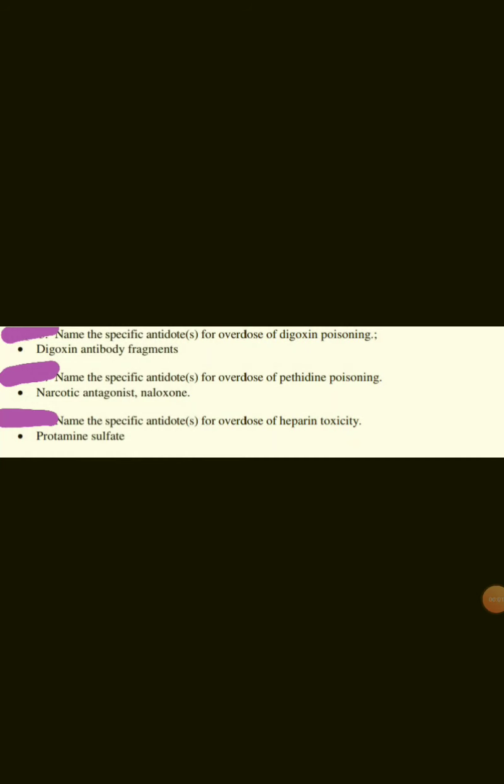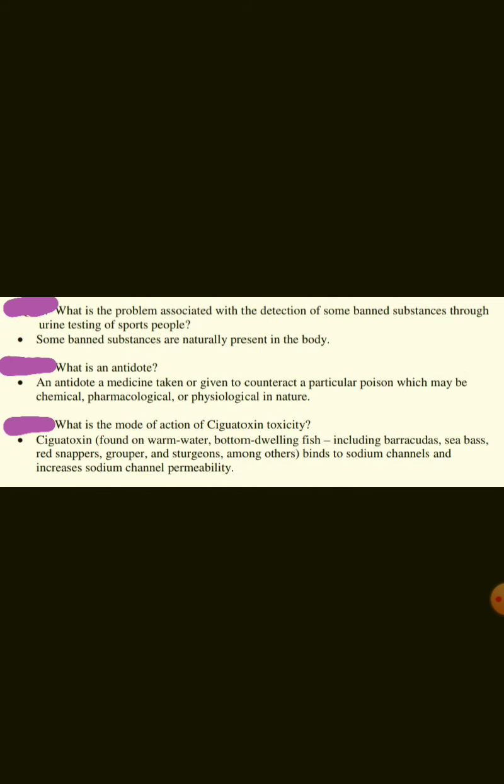Antidote for overdose of Digoxin poisoning: Digoxin Antibody Fragments. Antidote for overdose of Pethidine poisoning: Narcotic Antagonist Naloxone. Antidote for overdose of Heparin toxicity: Protamine Sulfate.